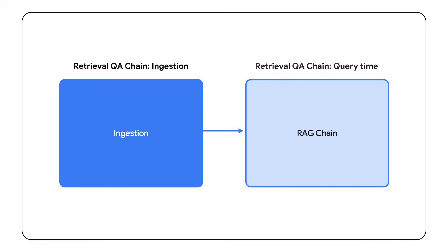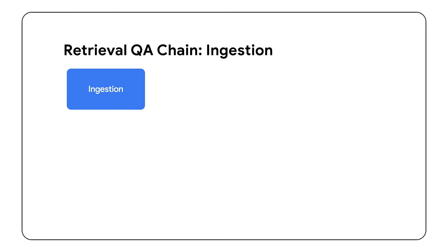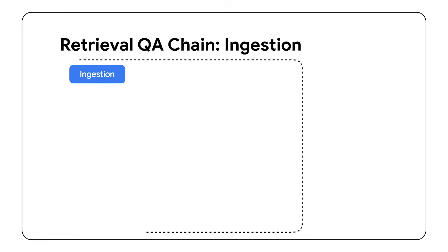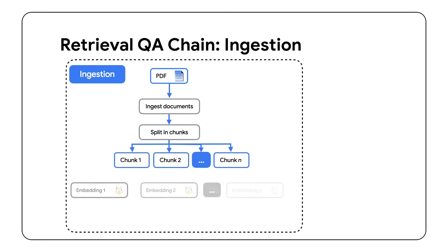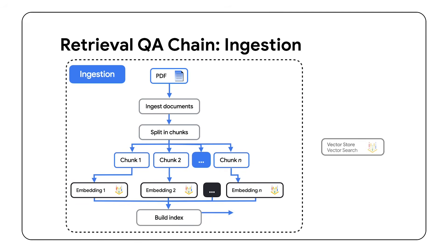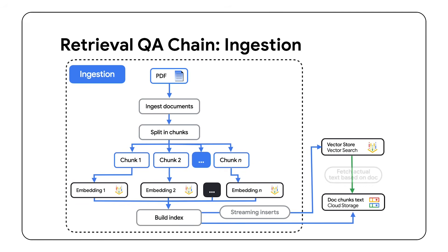A typical text or naive RAG has two major components: ingestion and query. Let's understand the flow at a high level. In the ingestion process, you ingest all the text data and split it into smaller chunks — like splitting a page into smaller paragraph chunks. For each of these chunks, you send them to an embedding model that converts them into vectors. Building vector chunks is important since it makes it easier to find chunks similar to the user query and filter the most important ones.